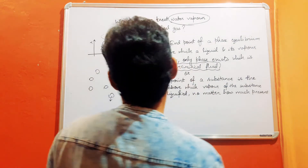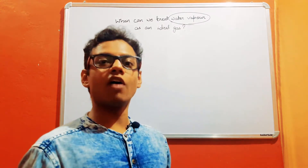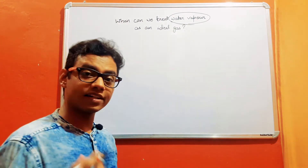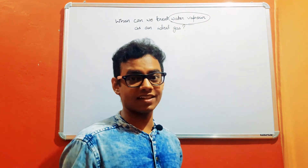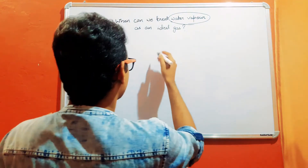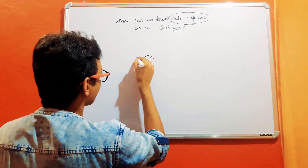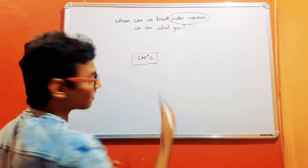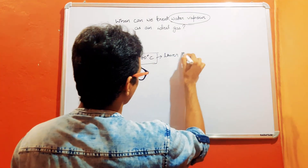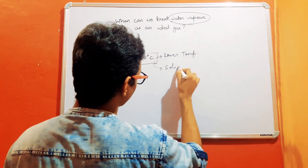Let us take an example to see how our intuition fails when deciding whether a temperature is high or low and how the critical point plays a role. Consider a temperature of minus 100 degrees Celsius. Most of us would say this is a lower temperature, and obviously it does seem low because most substances at this temperature exist in the solid phase.